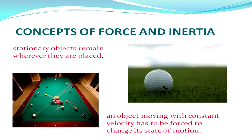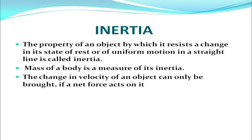We all know that stationary objects remain wherever they are placed. These objects cannot move on their own unless forced to change their state of rest. Similarly, an object moving with constant velocity has to be forced to change its state of motion. From all these examples, we can now define inertia. The property of an object by which it resists a change in its state of rest or of uniform motion in a straight line is called inertia.